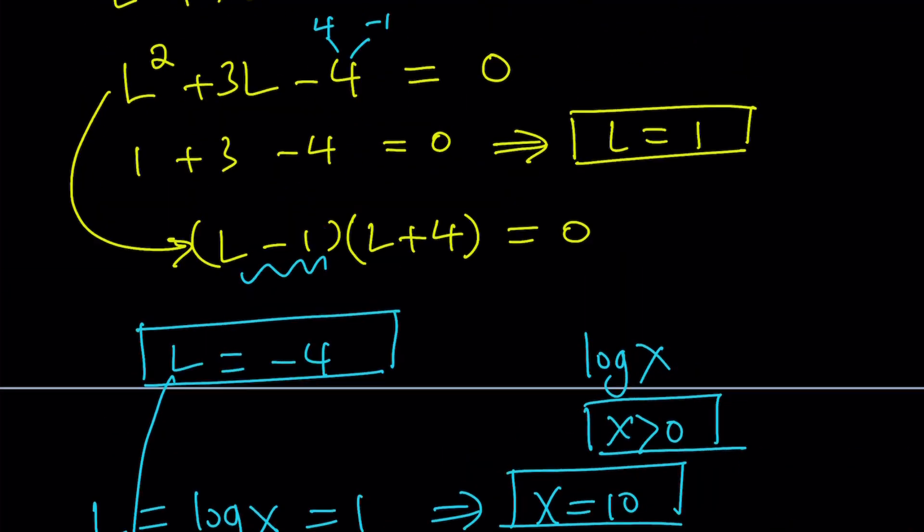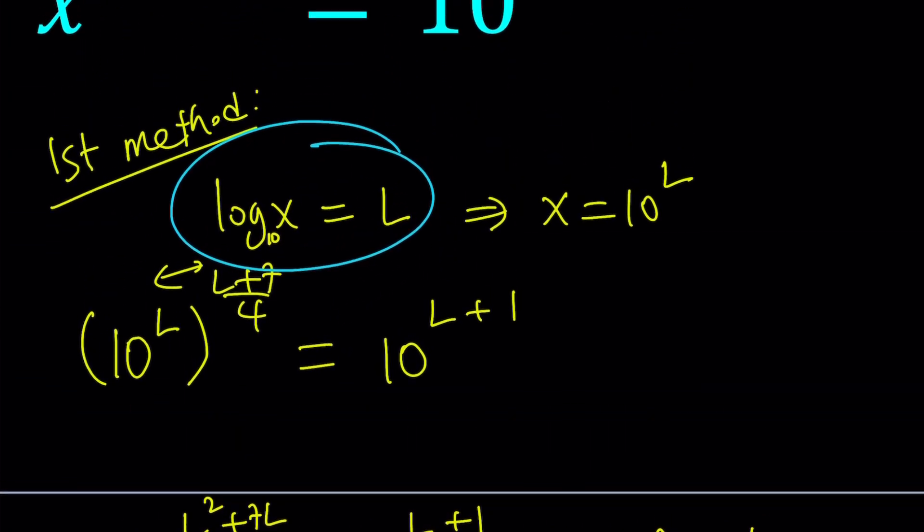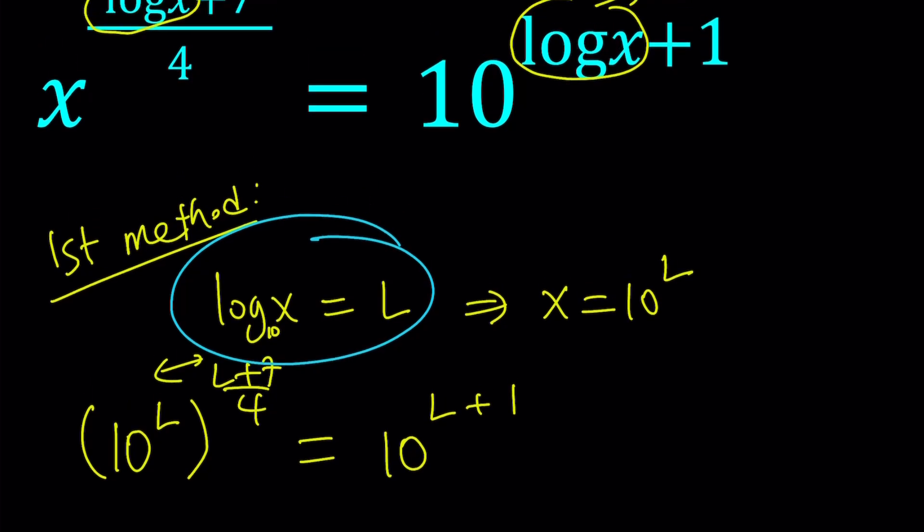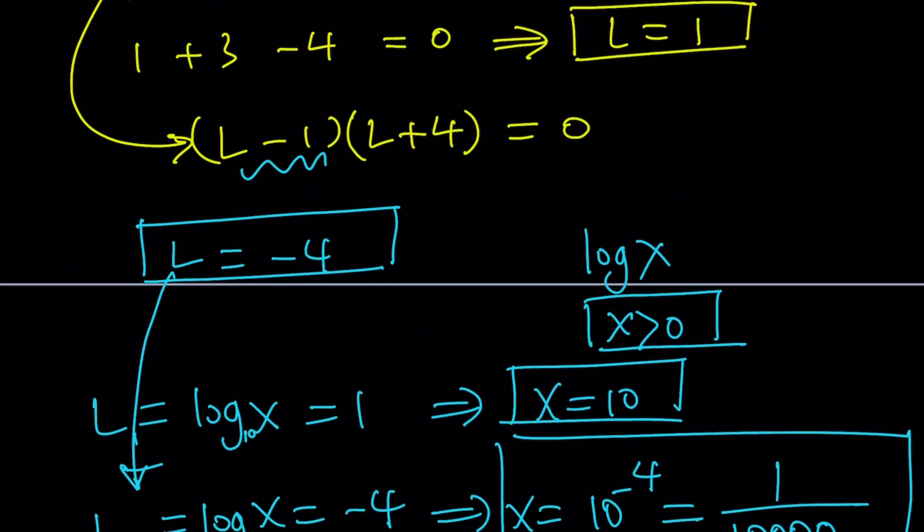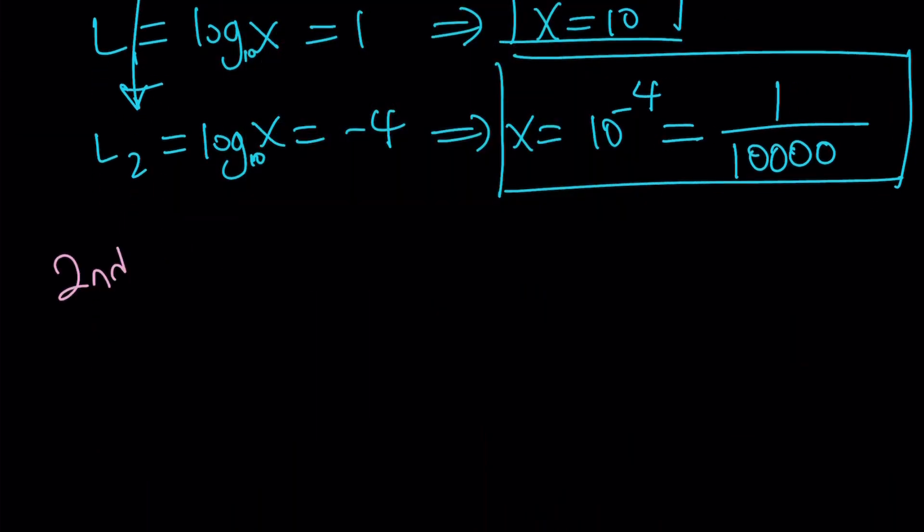Notice that L being negative did not cause any issues because it's not x. Let's take a look at the second method and see how that differs from the first one. They're not very much different, but we could also talk about alternative approaches.